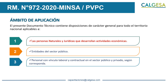Esta primera parte de la norma me habla sobre el ámbito de aplicación y me da tres puntos. Me dice que esta normativa aplica a la persona natural y jurídica que desarrolla actividades económicas. Cuando me habla de persona jurídica se refiere a las empresas. Cuando me habla de persona natural se refiere a cualquier individuo que desarrolle una actividad económica y como tal tiene un ruco.